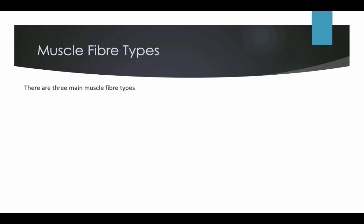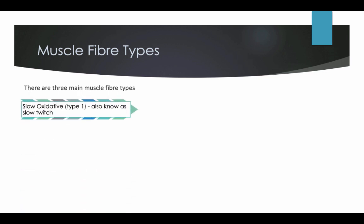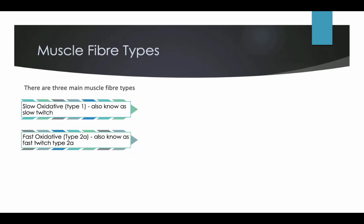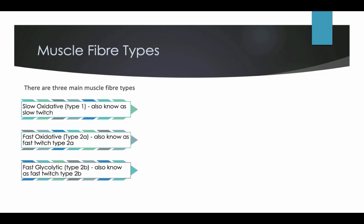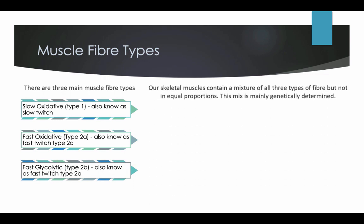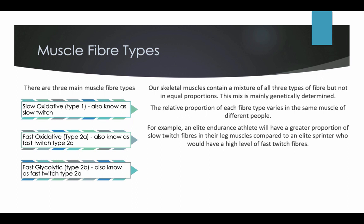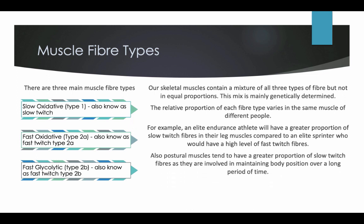Muscle fibre types. There are three main muscle fibre types: slow oxidative, also known as slow twitch; fast oxidative, also known as fast twitch type 2A; and fast glycolic, also known as fast twitch type 2B. Our skeletal muscles contain a mixture of all three types of fibres, but not in equal portions. This mix is mainly genetically determined. The relative proportion of each fibre type varies in the same muscle of different people. For example, an elite endurance athlete will have a greater proportion of slow twitch fibres in their leg muscles compared to an elite sprinter who would have a high level of fast twitch fibres. Postural muscles also tend to have a greater proportion of slow twitch fibres as they are involved in maintaining body position over a long period of time.